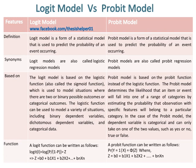Whereas the Probit Model is based on the Probit Function instead of the Logistic Function. The Probit Model determines the likelihood that an item or event will fall into one of a range of categories by estimating the probability that an observation with specific features will belong to a particular category. The dependent variable is categorical and can only take on one of two values, such as yes or no, true or false.